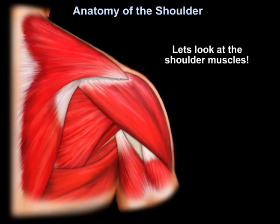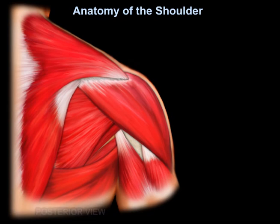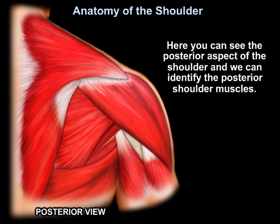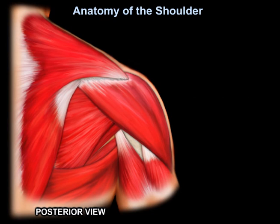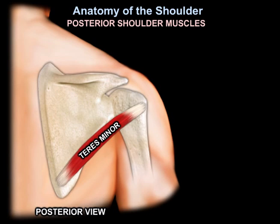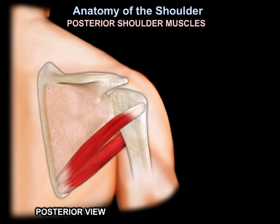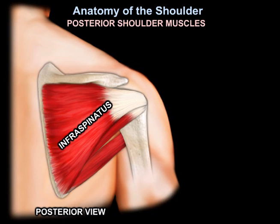Let's look at the shoulder muscles. Here you can see the posterior aspect of the shoulder, and we can identify the posterior shoulder muscles: the teres minor, the teres major, and the infraspinatus.